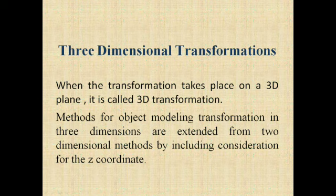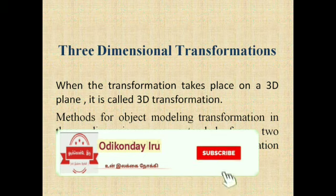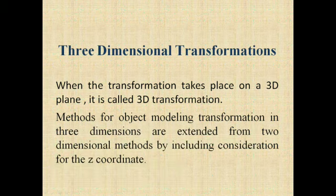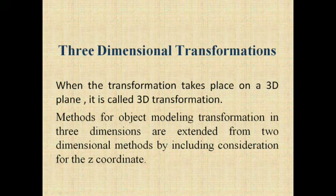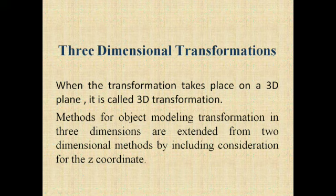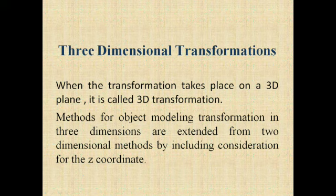Whatever we see, if you are looking at the person in the photograph, definitely that will be a 2D. In case, if you are looking at the person in the video, we can see how much is looking like a fat. Exactly we don't know, but we can get to the look of X, Y and Z. Methods for object modeling transformation in 3 dimensions are extended from 2D to 3D with the help of Z coordinate.